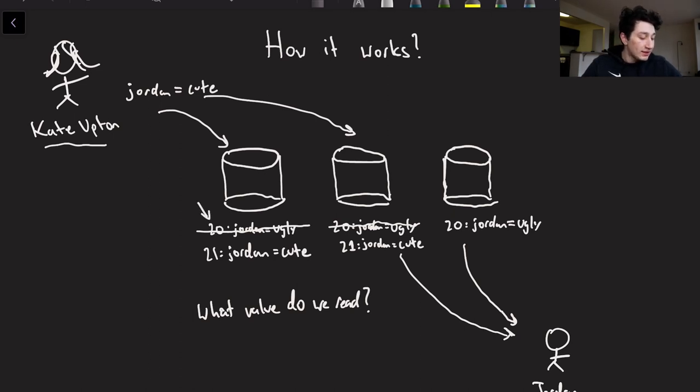So as you can see, we have three different databases, each of them with basically some sort of snapshot versioning. We've spoken about this in the past, but let's imagine that the Jordan key has a version. So originally it starts out as version 20 on all three of these databases, and then the two that get the write, which are this guy and this guy, are now updating version 21 to Jordan equals cute.